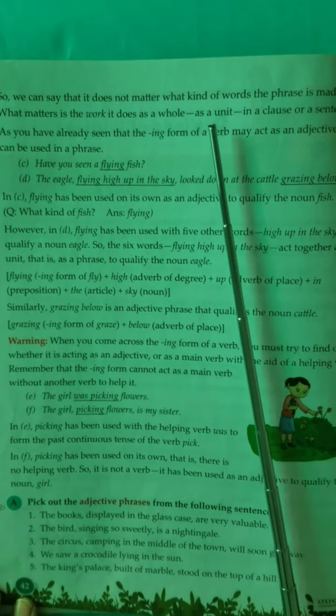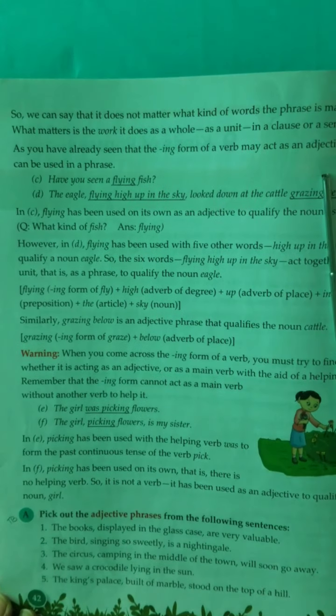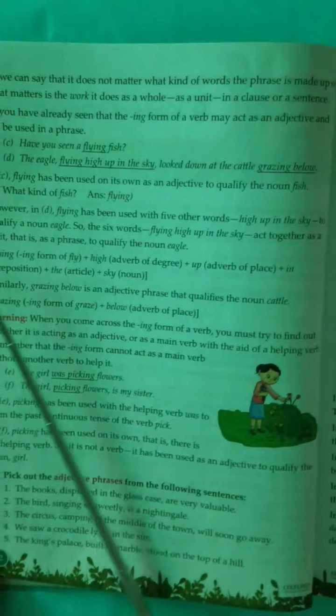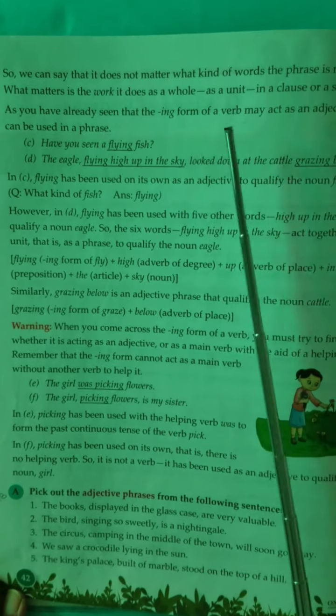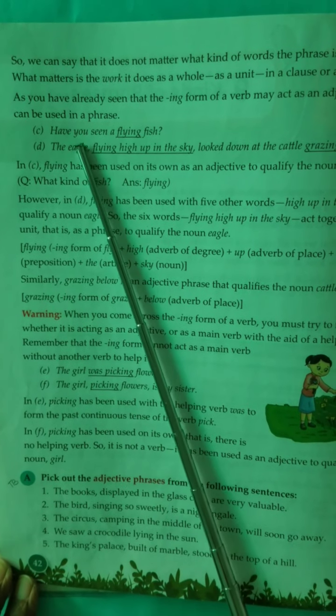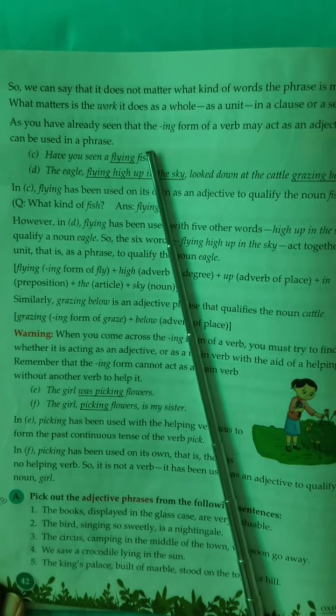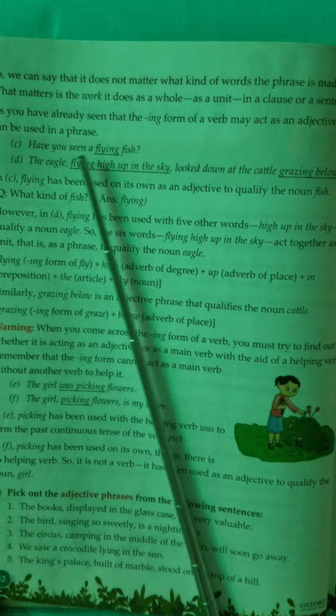So we can say that it does not matter what kind of words the phrase is made up of. What matters is the work it does as a whole — as a unit — in a clause or a sentence. What is the job of the phrase, whether it be in a sentence or in a clause? It doesn't make any difference. What is important is what work does it do. As you have already seen, the -ing form of a verb may act as an adjective and can be used in a phrase.